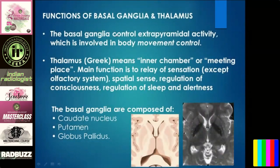Before discussing the pathologies, just a few words about the function of basal ganglia and thalamus. When we are studying, we often forget the function of important structures. The main function of basal ganglia is body movement control. The thalamus is also called the inner chamber or meeting place — it mainly helps in relay of sensation, facial sense, regulation of consciousness, sleep, and alertness.